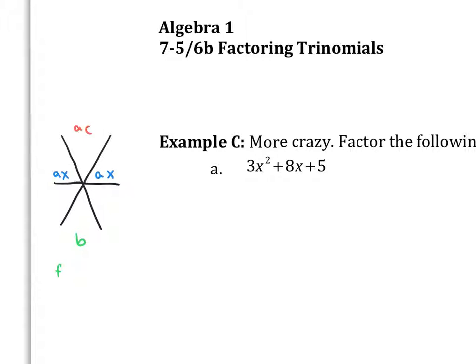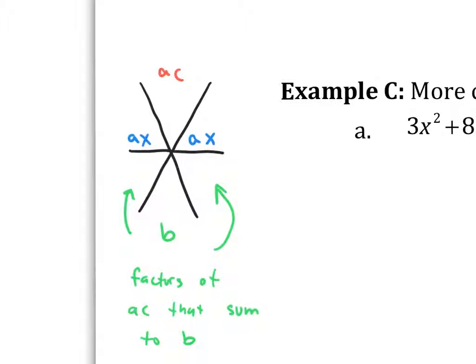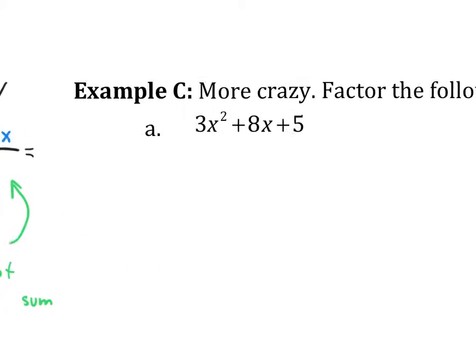And then down below, we need to find the factors of AC that sum to B. That's what we put inside the wings there. Now the last thing we're going to do is we have to simplify the wings as if they were fractions. So the best way, of course, to do this is to see it in action. So let's take a gander at part A.